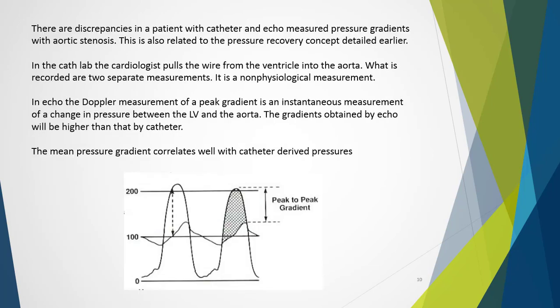Those working in both the catheter laboratory and echo clinic may see discrepancies in catheter and echo-derived pressure gradients, typically with aortic stenosis. This is related to the pressure recovery concept. In the catheter laboratory, the cardiologist pulls the wire back from the ventricle into the aorta, recording two separate measurements — peak aortic and peak LV pressures. This peak-to-peak method is non-physiological, as the readings cannot be made instantaneously. Reviewing the pressure waveforms, aortic peak pressure occurs after that of the left ventricle.